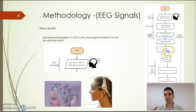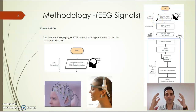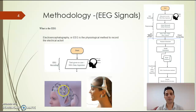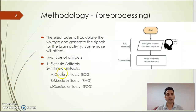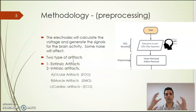Our methodology is represented in this flowchart, starting with EEG recording by placing the EEG device over the scalp. The electrodes calculate the voltage of brain activity and generate EEG signals. During EEG recording, we will have some noise from external resources like misplacement of the device, or internal sources like eye blinking or muscle activity.